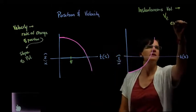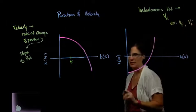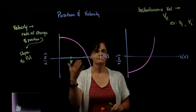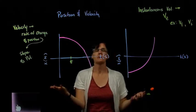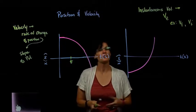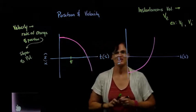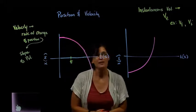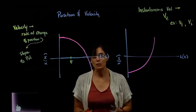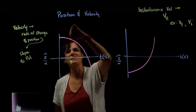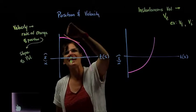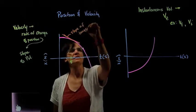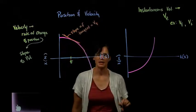Examples of instantaneous velocity include final velocity and initial velocity. If the velocity is the slope of the position versus time graph, then the slope at this point in time is our instantaneous velocity. To get the slope of a curved line, we need to remember our geometry: the slope at a very specific point is equivalent to the slope of its tangent — the line that intersects the curve at only that single point. That tangent slope equals the velocity at that point in time.